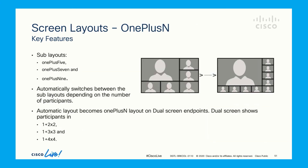This is the one plus N layout. Based on the number of participants, the layout changes between one plus 5, 7, and 9. In case of a dual screen endpoint, the first display shows the active participant and the second display shows equal panes of 2 by 2, 3 by 3, and 4 by 4.